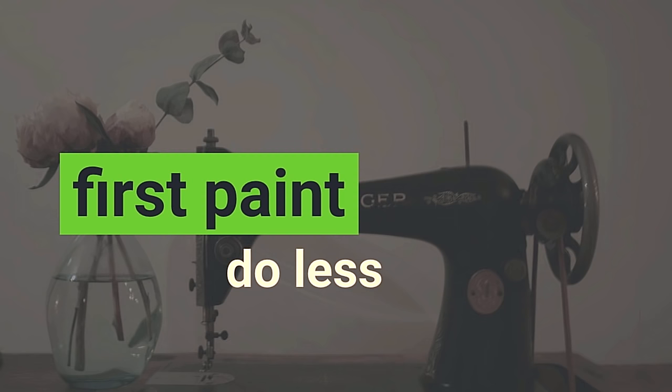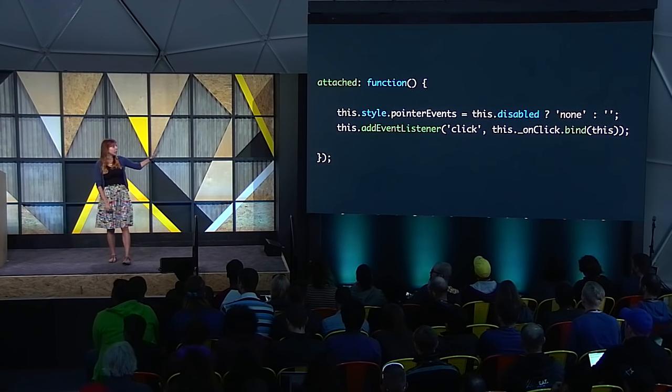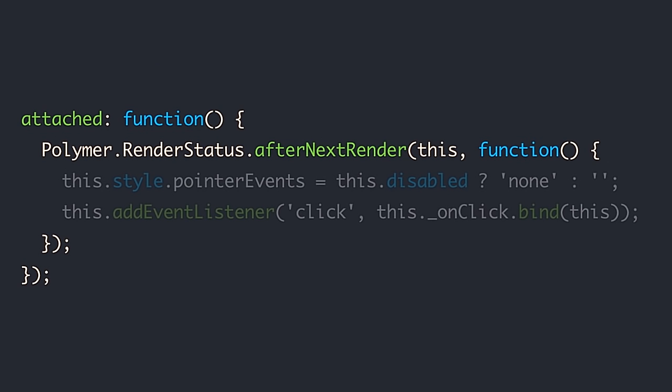By 'do less' we literally mean don't do anything you don't need before first paint. We had code in many Polymer elements where on attach we were updating pointer events for disabled things and adding click handlers — very reasonable-looking code, but if you do it a thousand times, that's a thousand event listeners set up before painting the page. So now we wrap it in afterNextRender: we do everything needed for paint immediately, and everything not needed for first paint runs right after the next render tick. Now my page and elements paint really fast and are interactable essentially instantly.